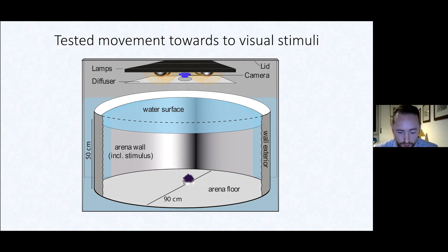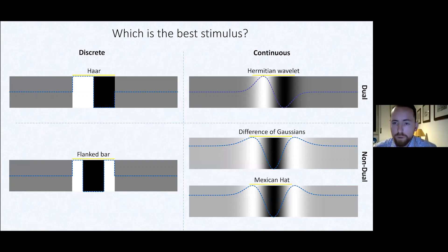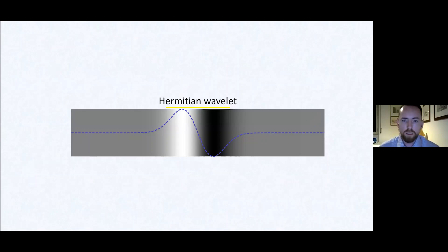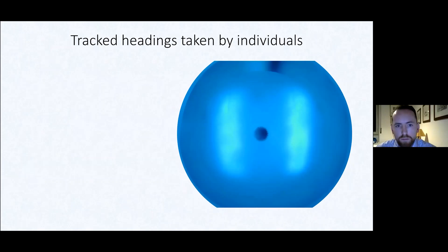A visual stimulus was placed on one wall of the arena to see if animals moved toward it or moved randomly. These animals will seek shelter, frequently moving toward dark regions, represented by a black bar. A wide variety of stimuli were tested. We settled on the first Hermitian wavelet, the first derivative of a Gaussian, which comprises a black and white region that when averaged are the same grey as the background. An animal with no resolution or insufficient resolution cannot see this target and cannot move toward it.